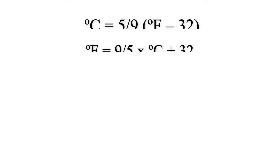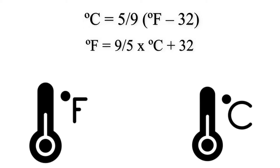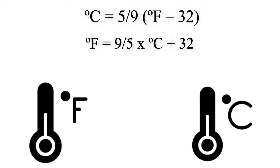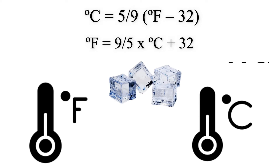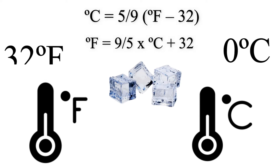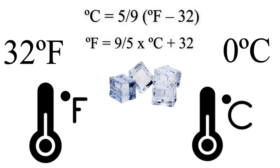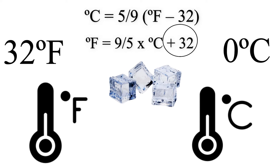How were these formulas developed? The formulas were developed by comparing the two scales. Since the freezing point is 0 degrees in the Celsius scale and 32 degrees in the Fahrenheit scale, we subtract 32 when converting from Fahrenheit to Celsius and add 32 when converting from Celsius to Fahrenheit.